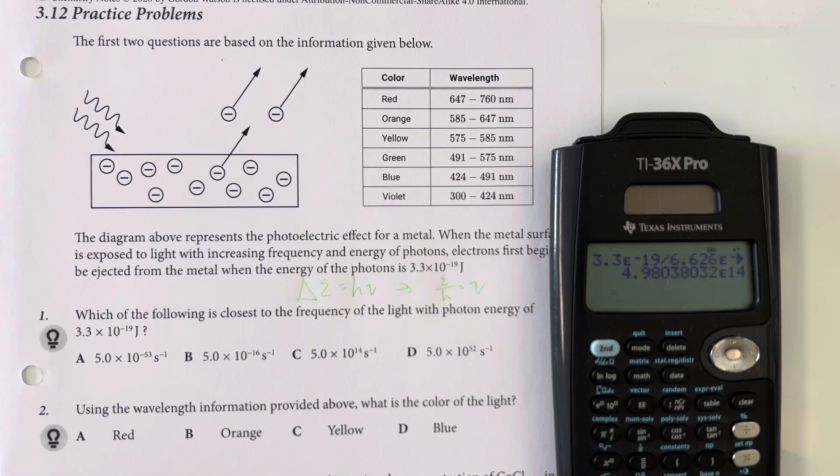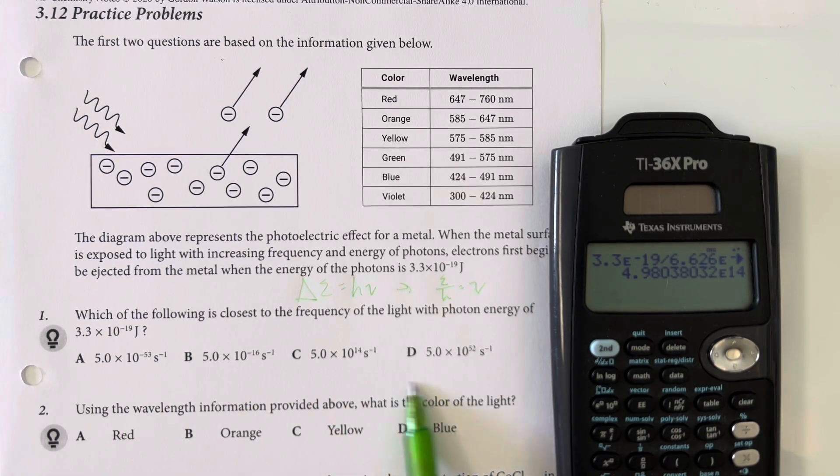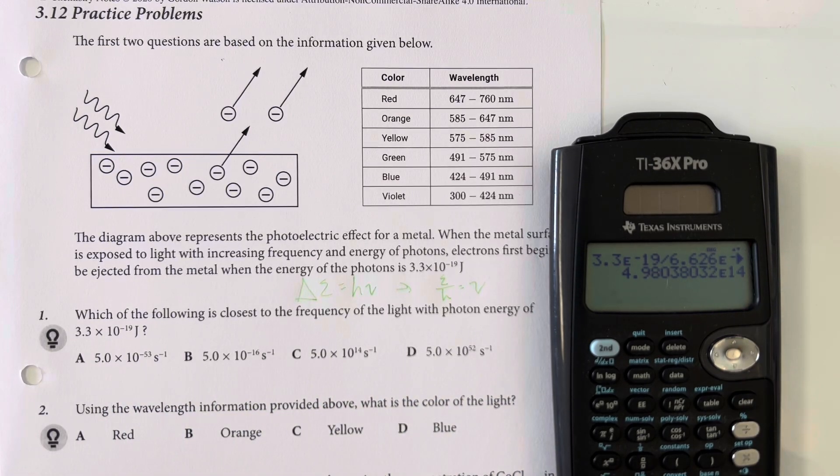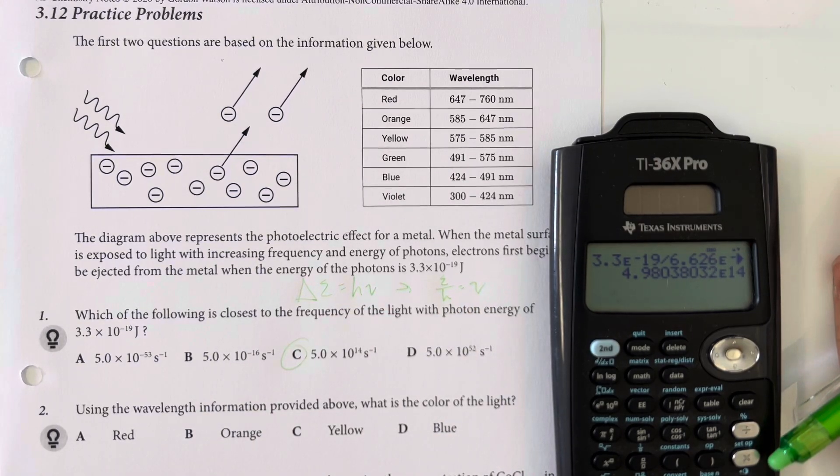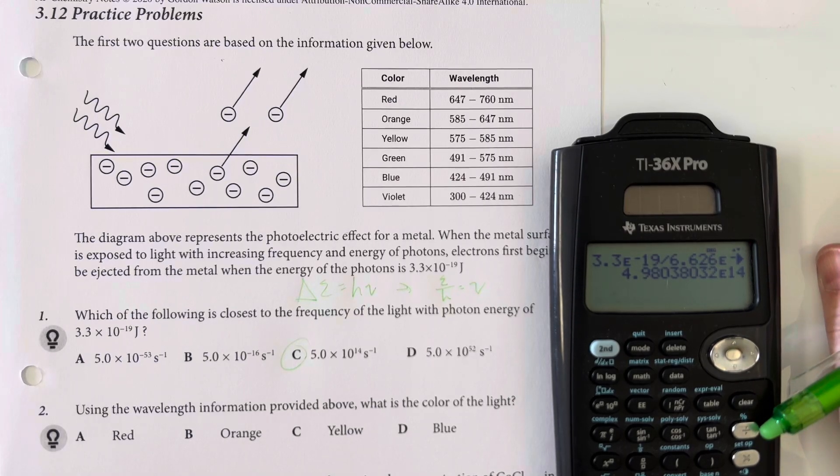And I only get 2 sig figs. So this is going to round to 5.0. Then I just need to make sure that I am choosing the exponent that is correct. That is going to be times 10 to the 14th. And then my unit for frequency is per second or hertz.